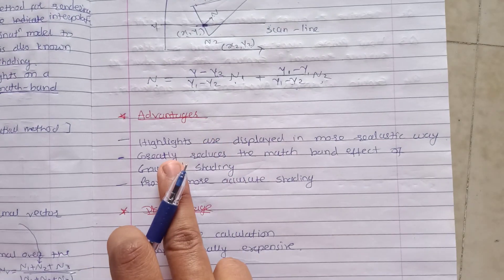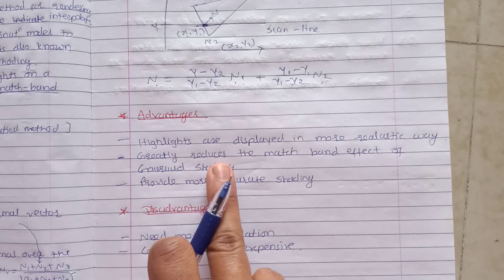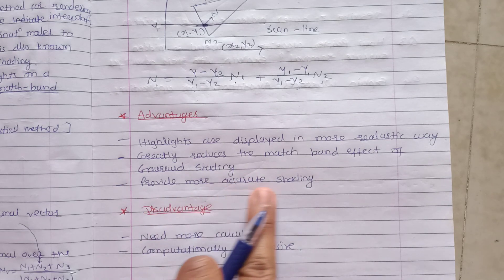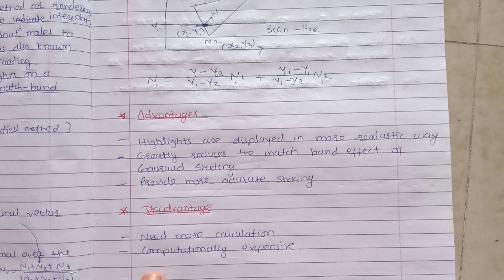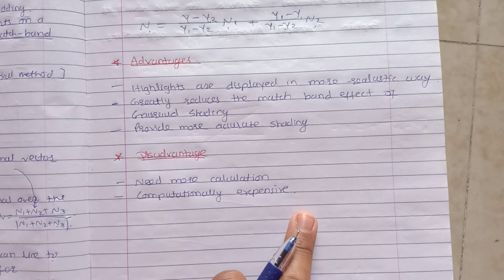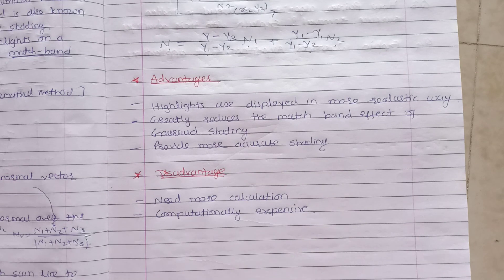The advantages are: highlights are displayed in a more realistic way, it greatly reduces the Mach band effect of Gouraud shading, and provides more accurate shading. The disadvantage is that it needs more calculations and is computationally expensive.